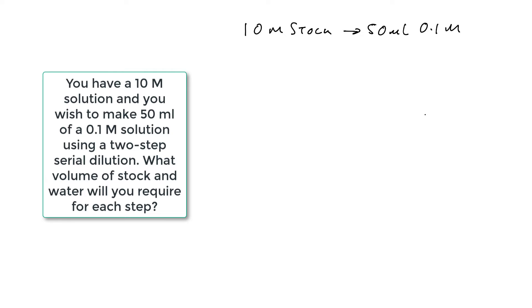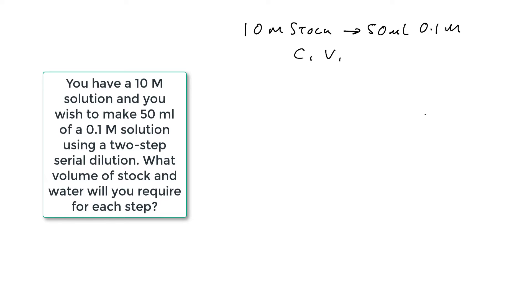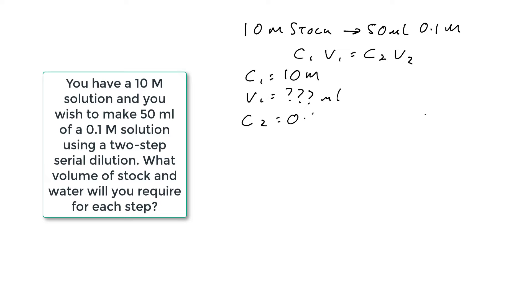Let's do the calculation. We've got a 10 molar stock and we want to make 50 mils of a 0.1 molar solution using the equation C1V1 equals C2V2, where C1 is the concentration of the stock, which in this case is 10 molar. V1 is the volume we're trying to work out in mils, which we don't know. C2 is the concentration of the solution after the dilution, which is 0.1 molar, and the volume of the solution that we require is 50 mils.